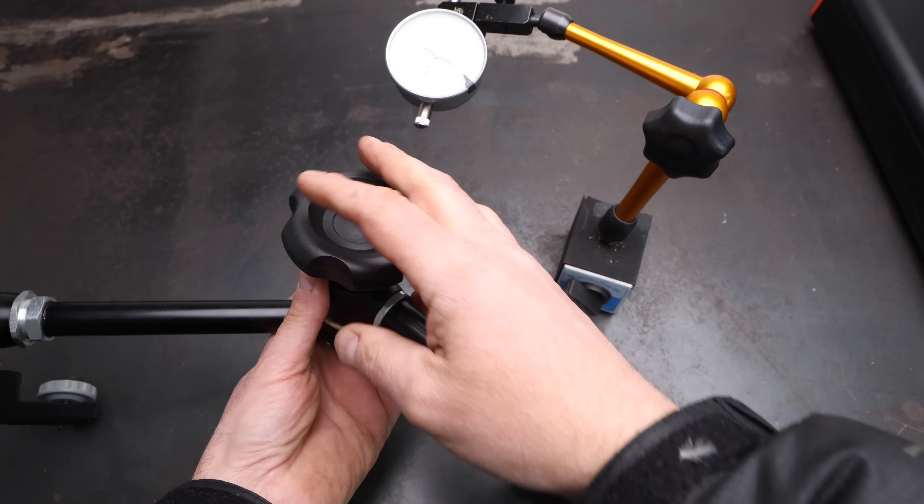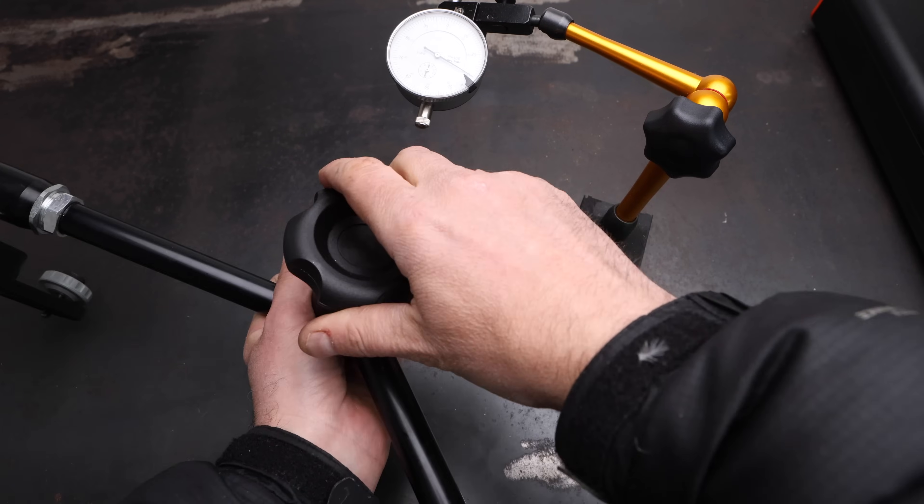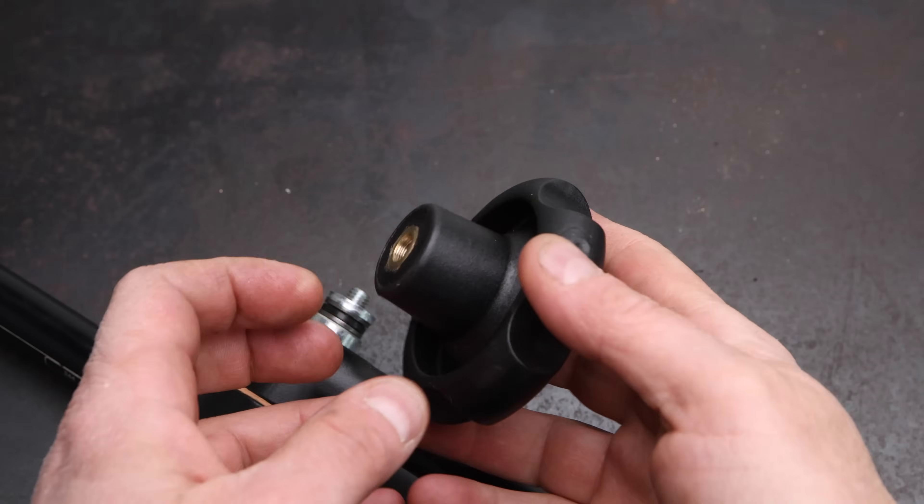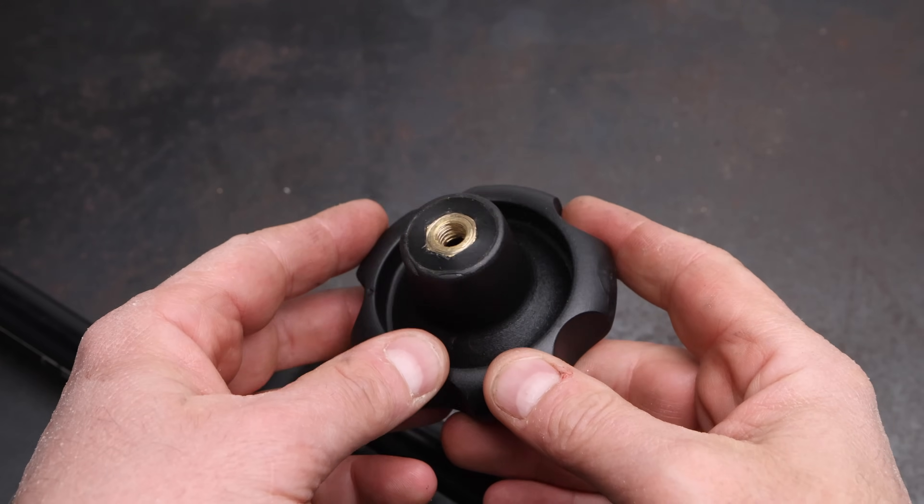The problem I've got with this camera arm is that the locking mechanism has failed. The knob just free spins and it fails to lock the actual arm. After a little investigation the culprit appears to be this brass nut cast into the back of the knob. The threads have stripped which is why the knob free spins.